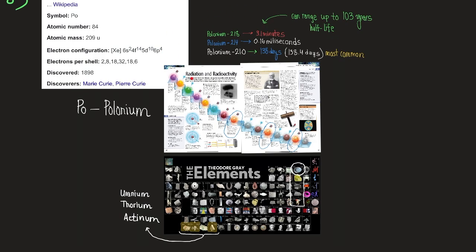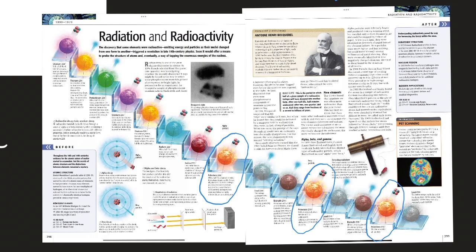Here we have polonium-218, polonium-214, polonium-210. The half-life of polonium-218 is 3.1 minutes. The half-life of polonium-214 is 0.1 milliseconds. And the half-life of polonium-210 is 138 days, or 138.4 days, to be more precise. This is the most common form. Here we have radiation and radioactivity, if you want to screenshot that and learn more about radiation and radioactivity.